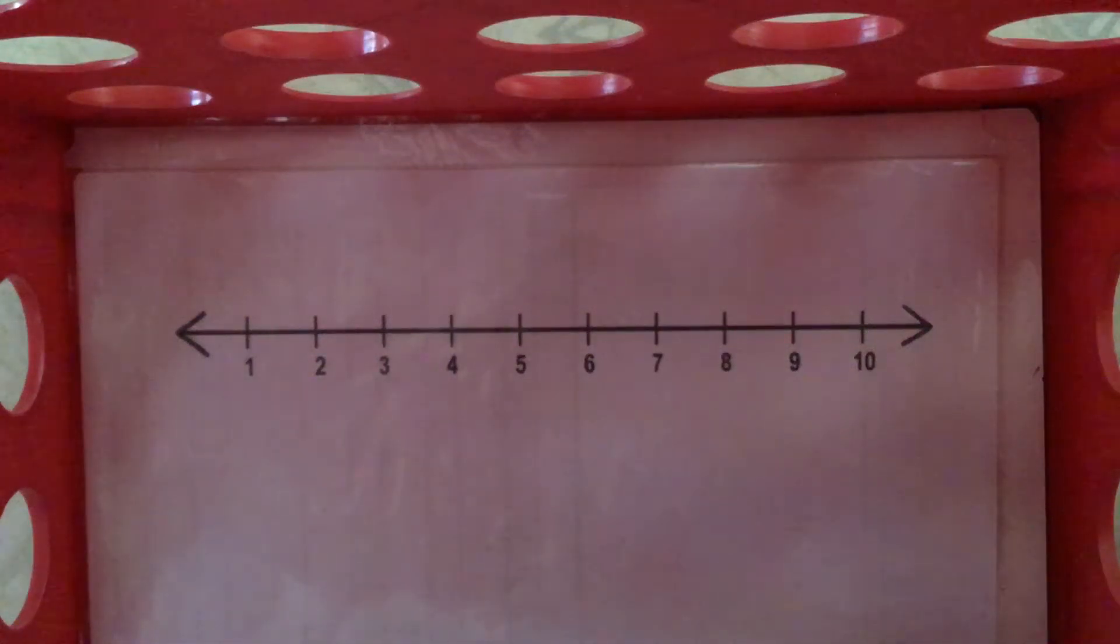Alright, TK friends, this is a number line. I don't know if you remember, but we watched Moby and Annie use a number line for some addition problems or addition equations.